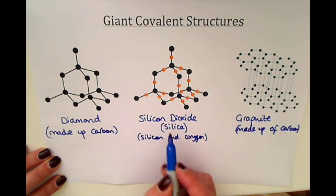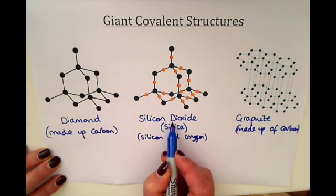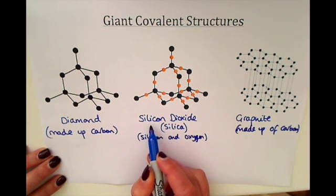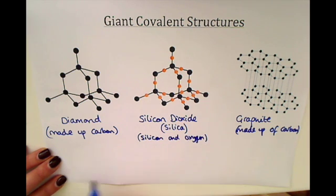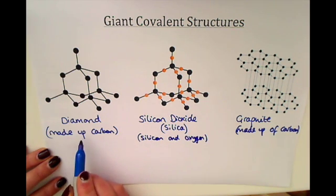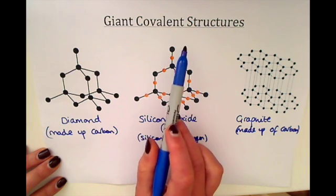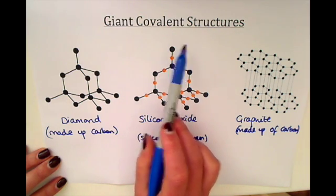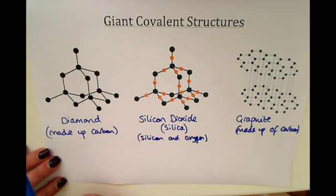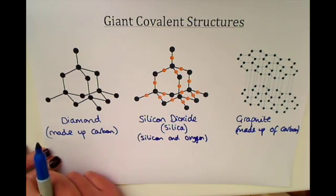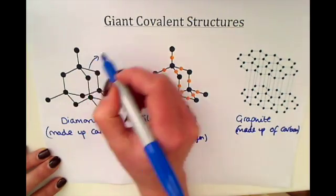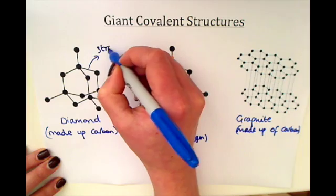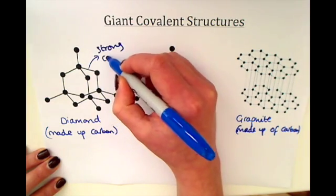The name silicon dioxide gives a hint — 'di' means two, so there are two oxygens with one silicon. These giant covalent structures have very different properties to simple molecules that also have covalent bonding. These lines represent a strong covalent bond.